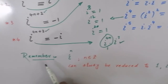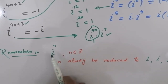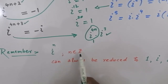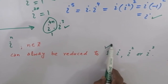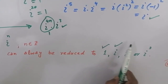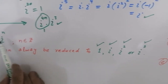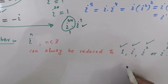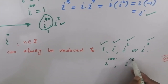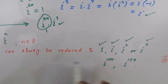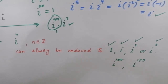We need to remember this important point as well: IOTA to the power n, meaning any integral power of IOTA where n belongs to the set of integers, can always be reduced to either 1, IOTA, IOTA squared, or IOTA cube. It doesn't matter if IOTA's power is 100 or 139 — any integral power always changes within these four terms.